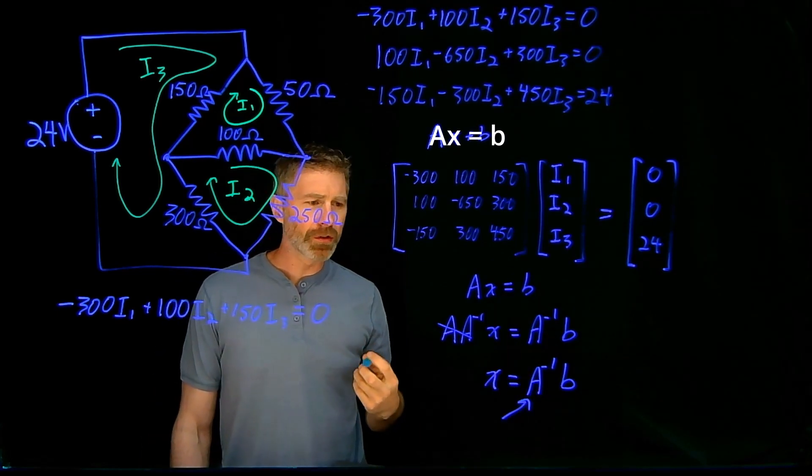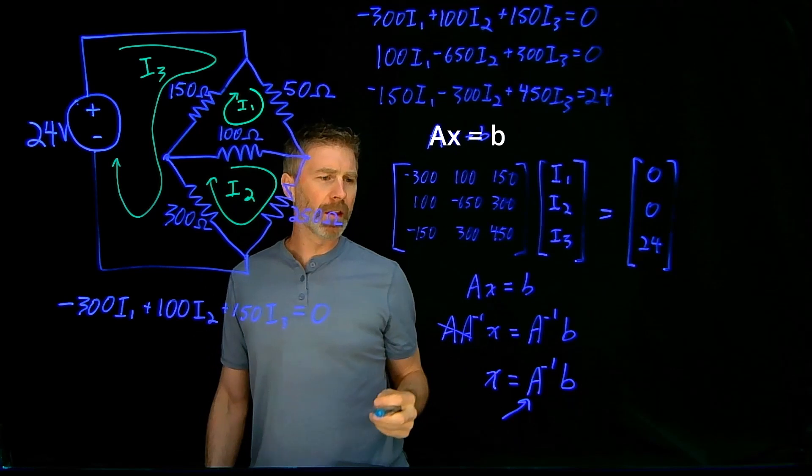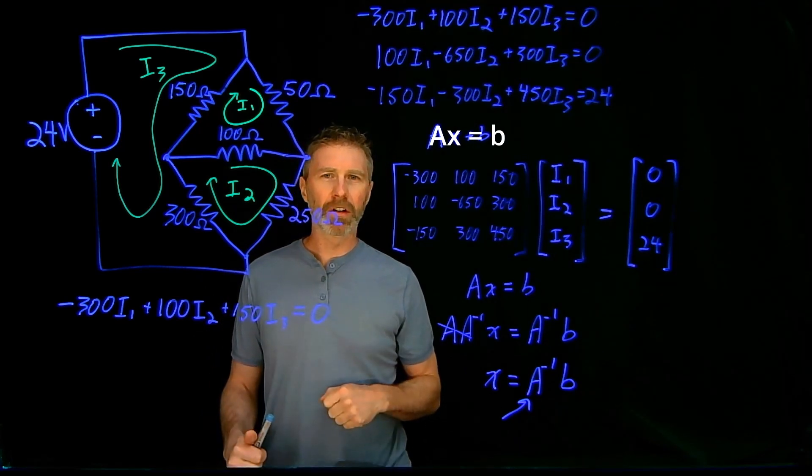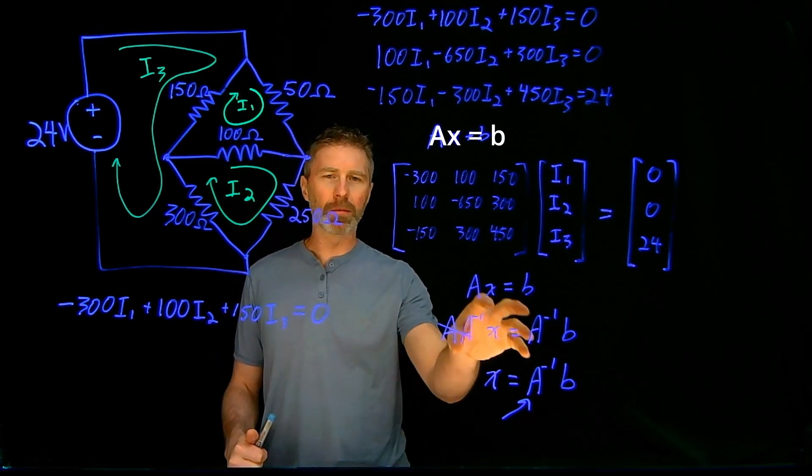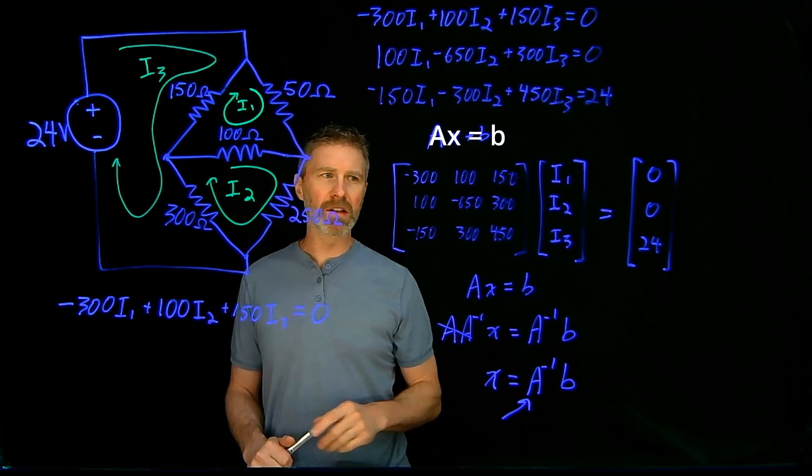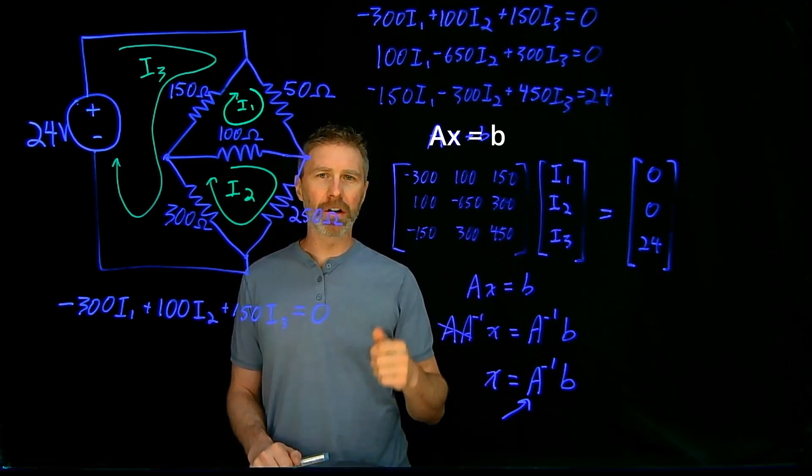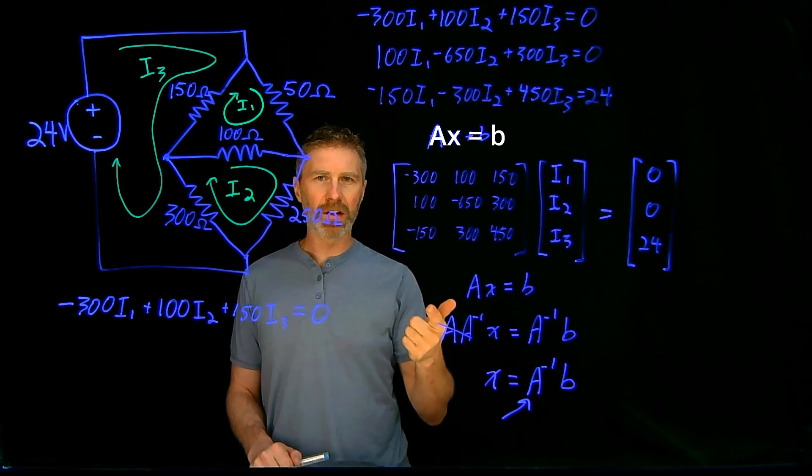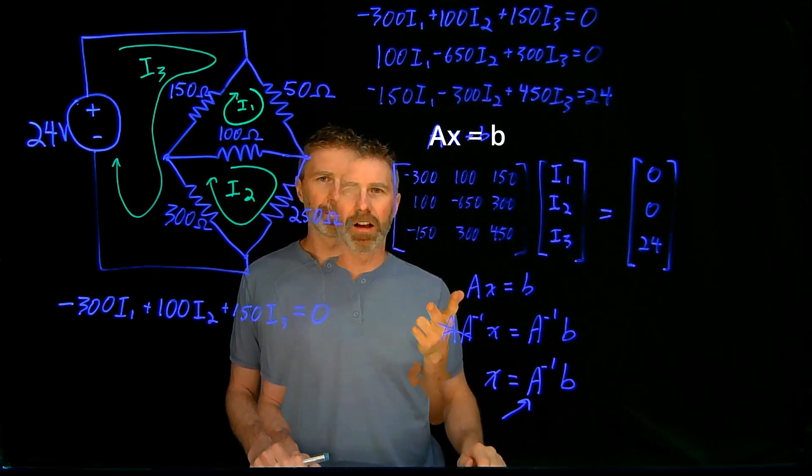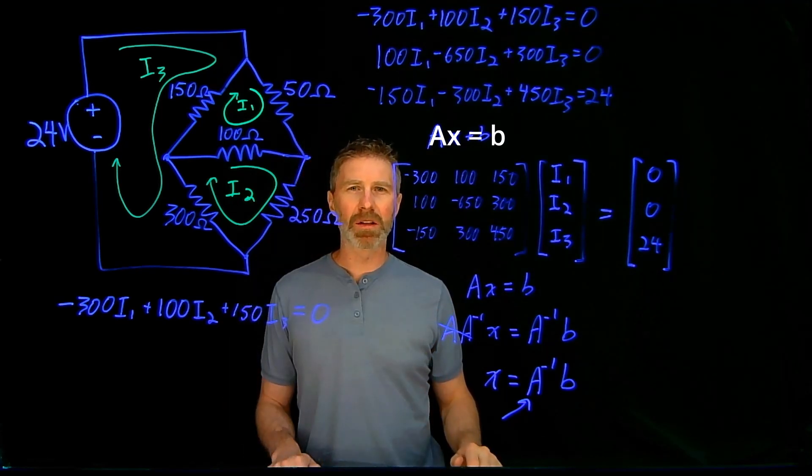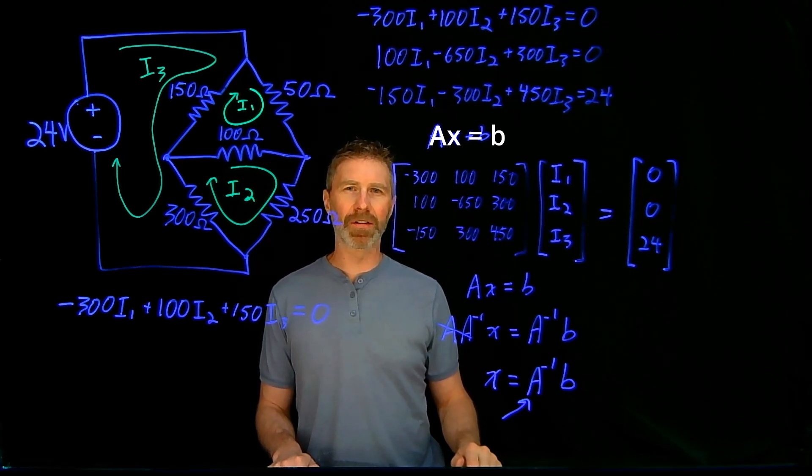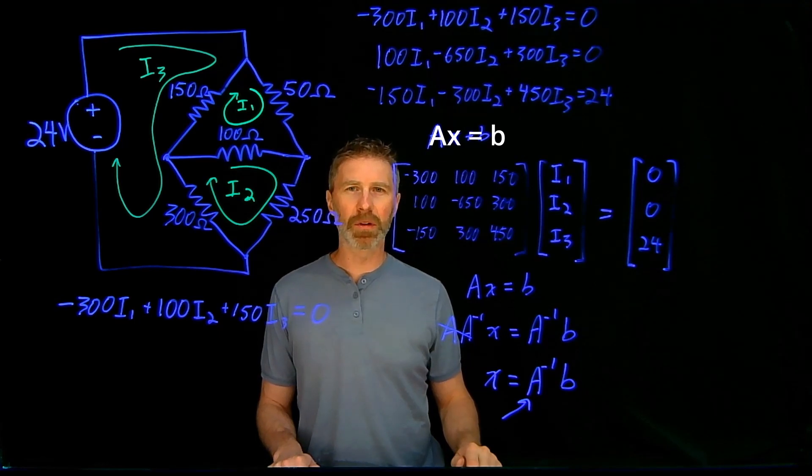Now the tricky part in doing all of this is figuring out what the inverse of A is. And there's a number of different tools, number of different software packages that can help you figure that out. We're going to look at three different applications today that can help us solve this, figure out what x is, or in our case, I. And those applications are MATLAB, Excel, and a website. And we'll start with MATLAB, which certainly has the most matrix functionality of any of these applications, but it's also the most expensive. So not everybody's going to have access to MATLAB. So let's take a look at how we use MATLAB.